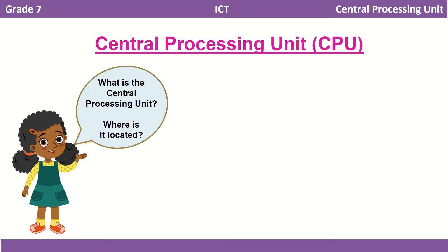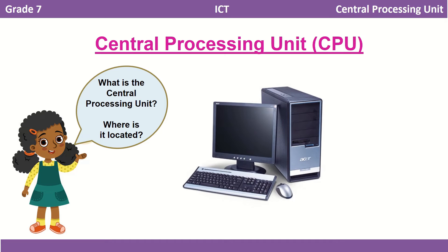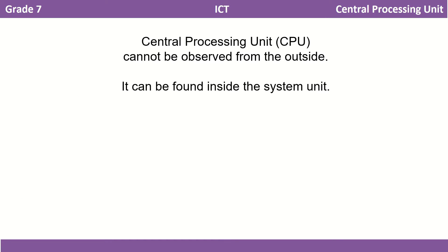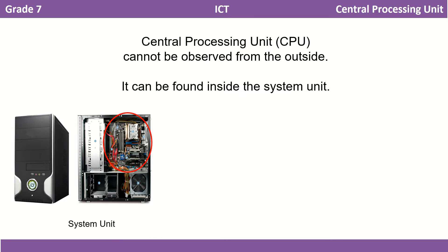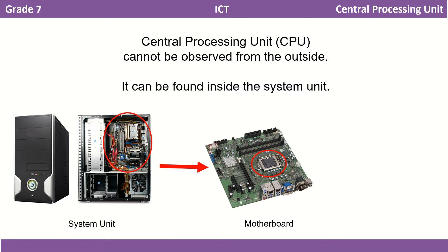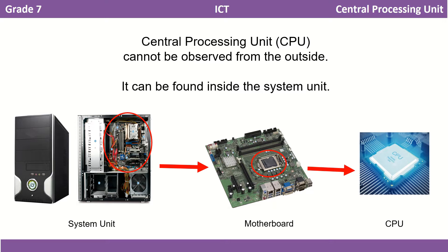Then where is this central processing unit in a computer? We have learned about a part called the system unit, inside of which we can see the central processing unit. We now know that the central processing unit is not something we can see outside the computer. After removing the side panel of the system unit, we see a board like a tray which we call the motherboard, and inside that we can see the central processing unit.